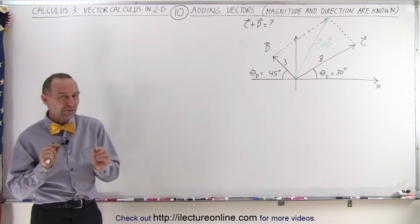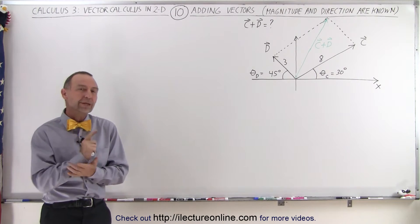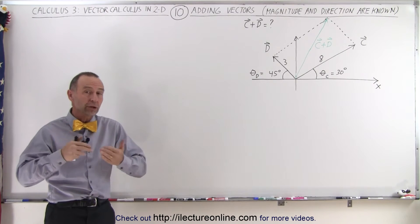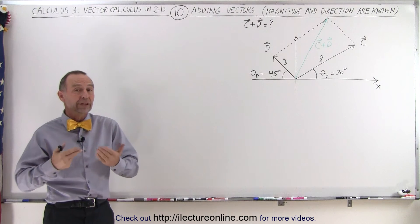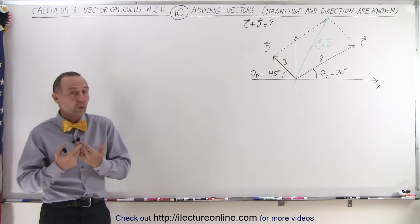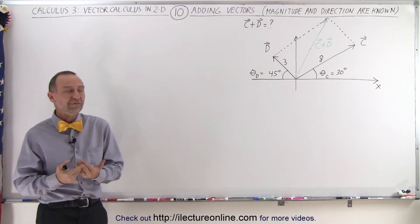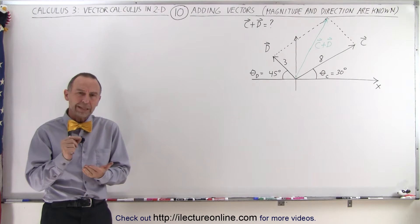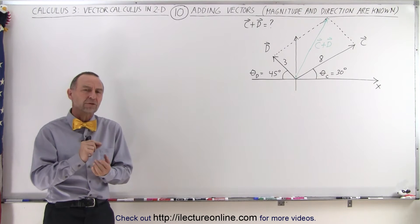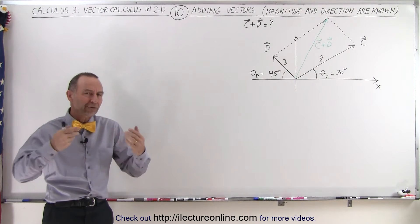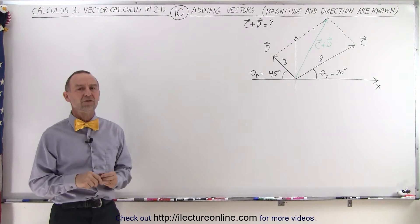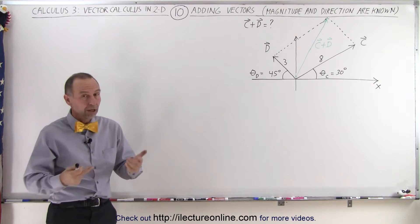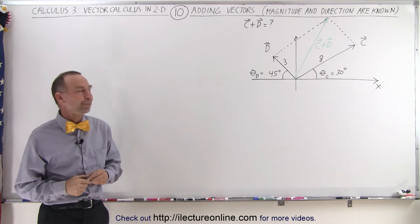We have to be careful here because we realize that all the magnitudes of all the components and all the vectors must always be positive, yet sometimes they could be pointing in a negative direction, so we have to be careful how we manage that. Here's an example of how to do that.